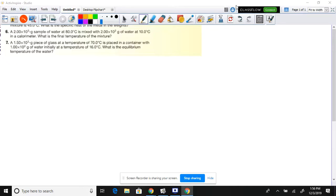Number seven. A 150 gram piece of glass at a temperature of 70 degrees is placed in a container with 100 grams of water initially at a temperature of 16 degrees. What's the equilibrium temperature?